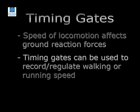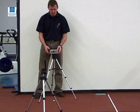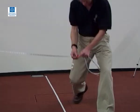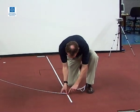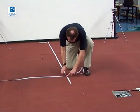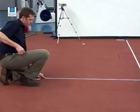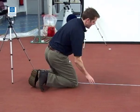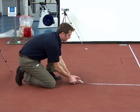The speed of locomotion affects ground reaction forces, therefore it is important when recording force that the speed of the participant is also recorded. Speed of locomotion can be determined using timing gates. These typically comprise a set of photoelectric cells and reflectors linked to a timing device. The participant breaks the first beam to start the timer and the second beam to stop it. Average speed can then be calculated by dividing the distance between the cells by the time.